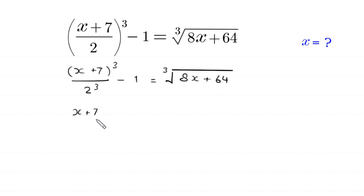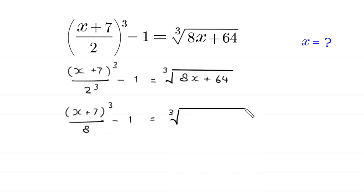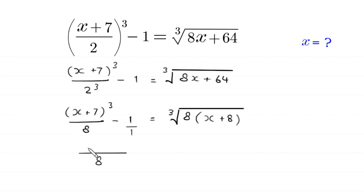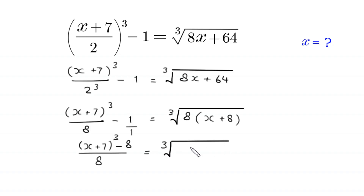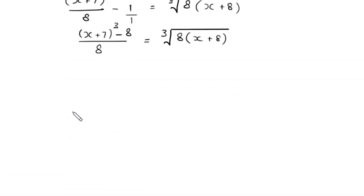Next, (x+7)³ divided by 8, minus 1, equals the cube root of 8 times (x+8). From the right-hand side we factor out 8 as a common factor, leaving 8(x+8). We write a common denominator of 8 on the left, giving us (x+7)³ minus 8, all over 8, equals the cube root of 8(x+8).